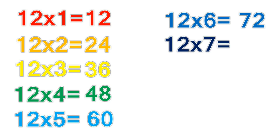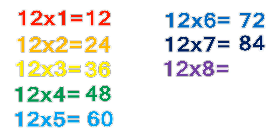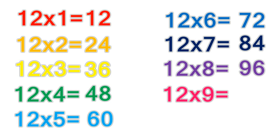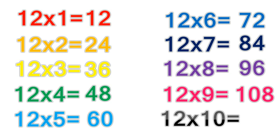12 times 7 equals 84. 12 times 8 equals 96. 12 times 9 equals 108. 12 times 10 equals 120.